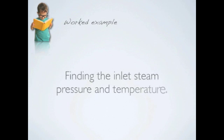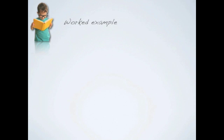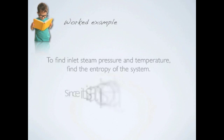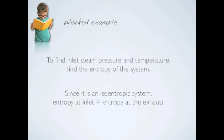And now, we are left with finding the inlet steam pressure and temperature. We can do this by finding the entropy. In this particular case, the system is isentropic. This means that the entropy at the inlet is the same as the entropy at the exhaust.